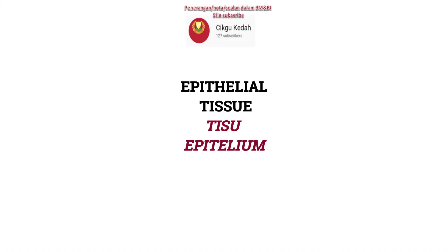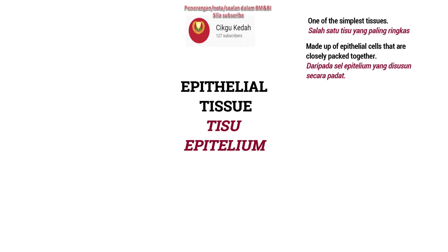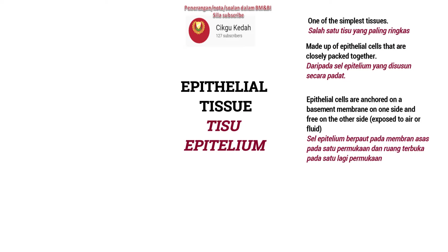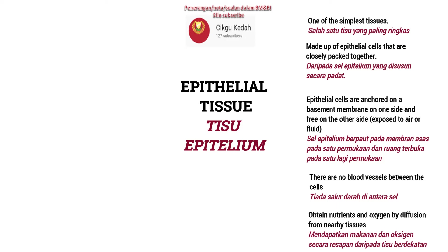Epithelial tissue is one of the simplest tissues, made up of epithelial cells that are closely packed together. Epithelial cells are anchored on the basement membrane on one side and free on the other side. There are no blood vessels between the cells; nutrients and oxygen are obtained by diffusion from nearby tissue.